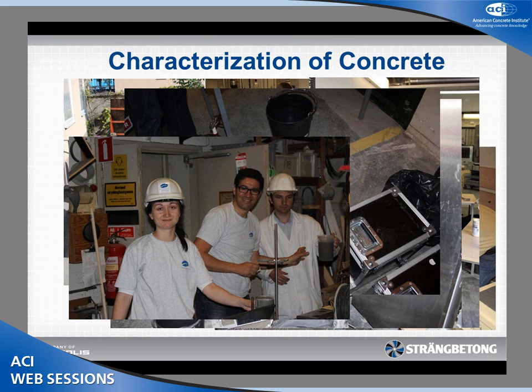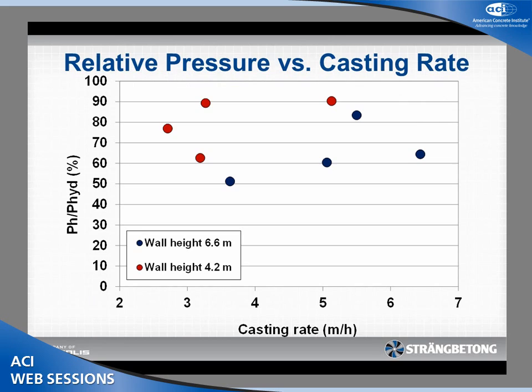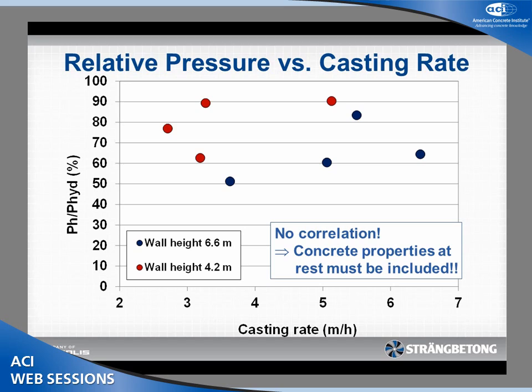Going more into the results: if we plot the relative pressure — the actual pressure relative to the hydrostatic in percent, where 100% is hydrostatic and 0% is no pressure — versus the casting rate, we see there are no good correlations. We have lower walls and higher walls, varying between 50 and 90 percent of hydrostatic. This emphasizes that when predicting pressures, the concrete properties at rest must be included somehow.